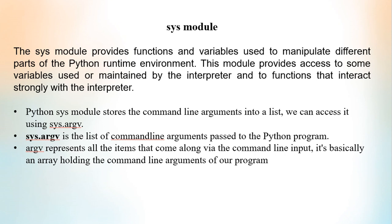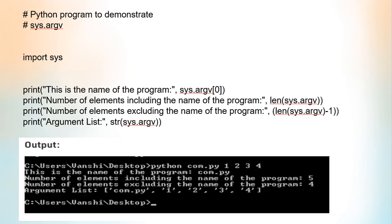sys.argv is the list of command line arguments passed to a Python program. argv represents all the items that come along via the command line input. For example, let's look at a program. Before using the argv statement, we have to import the Sys module into the Python program using the import statement.